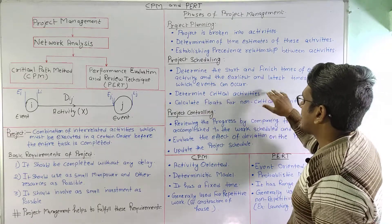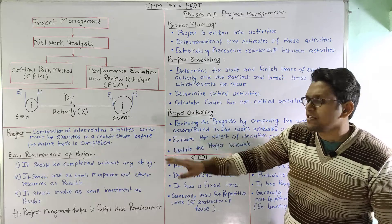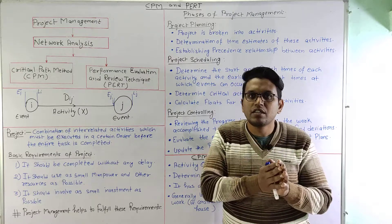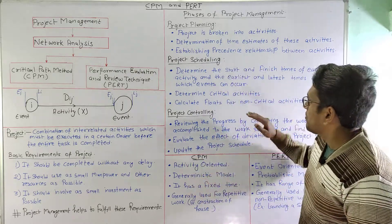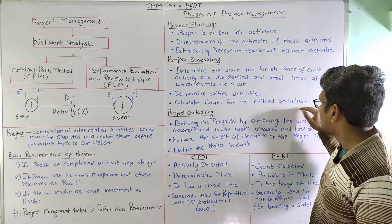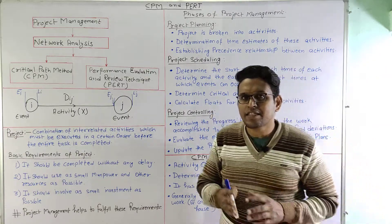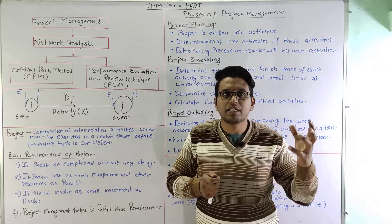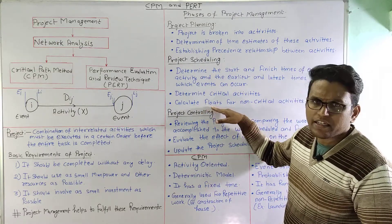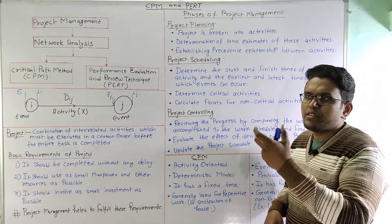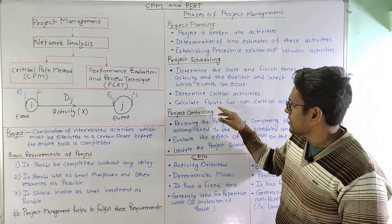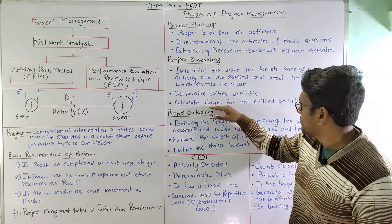Next, we determine the critical activities. Critical activities are those where delaying any one of them will delay the overall project time. We then calculate the float for non-critical activities. Floats are the time by which an activity can be started early or delayed. For a critical activity, the value of float is zero — critical activities cannot be started early or late. For non-critical activities, we have a certain value of float, which we will calculate in further lectures.